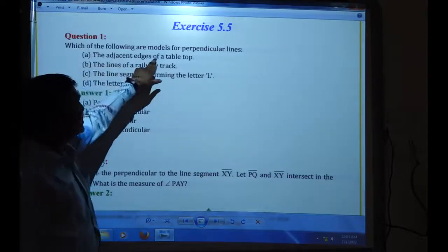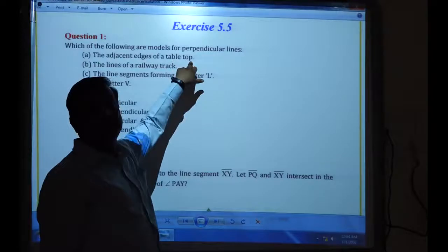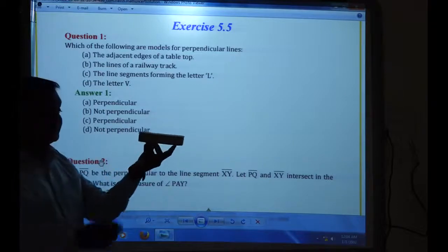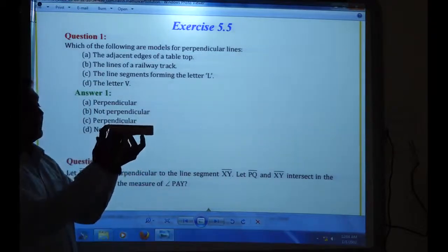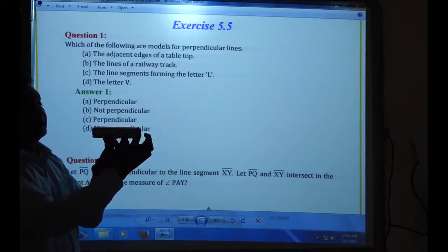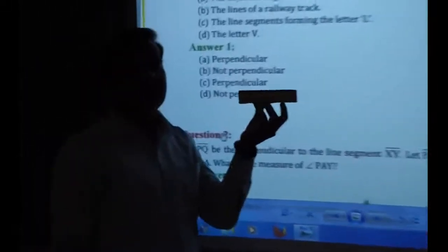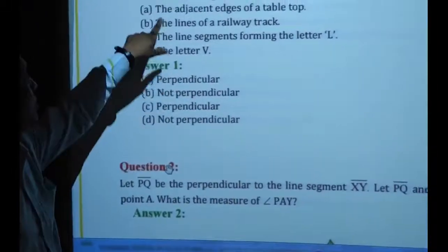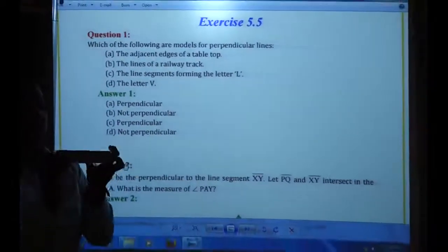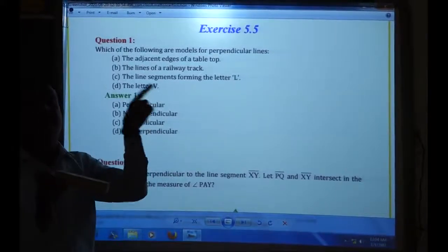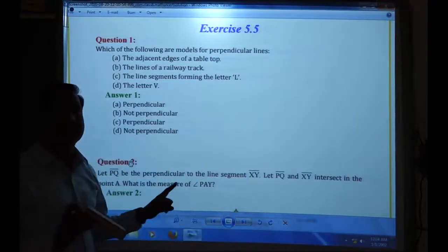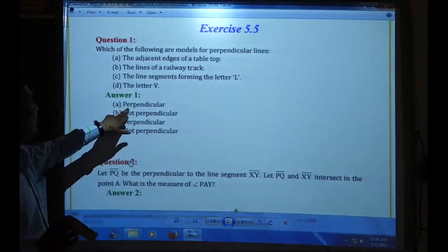The adjacent edges of the table top — if you see the table top, we will take the example of this gesture. We will assume this is one line and this is one line. Both these lines are perpendicular. Top edge line — so perpendicular. The adjacent edges: this is one edge and this is another edge. When both edges are meeting, they form an L-shape or T-shape figure. If it forms an L or a T, those lines are perpendicular lines.